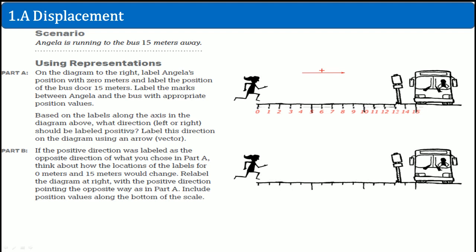Next, if the positive direction was labeled in the opposite direction, how would it look like? Well, that means the bus would be at the starting zero position. That's if you flip it. That's what happens if you relabel it, assuming the bus starts at zero and she's going towards it. It depends on what point of view you're looking from.